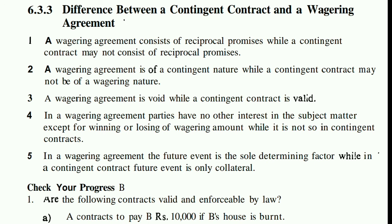The fifth point: in a wagering contract, the future event is the determining factor, while in a contingent contract the future event is only collateral.